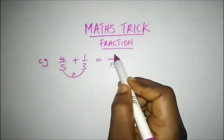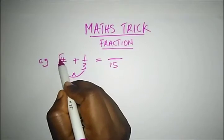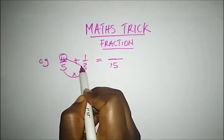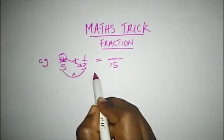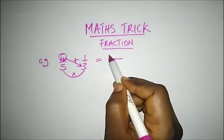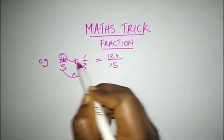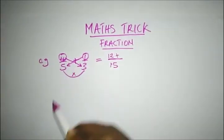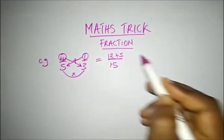And to get what will be on our numerator, we'll come to our left hand side, which is 4, and make 4 multiply this particular diagonal line to multiply 3, which will give us 12. Plus here, 1 multiplying 5, which will give us 5.